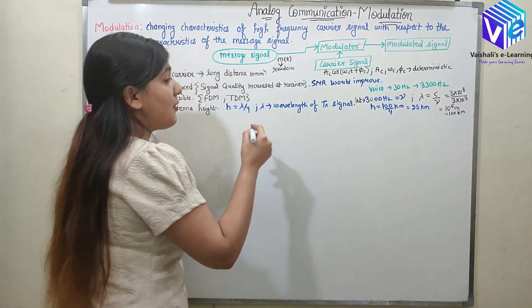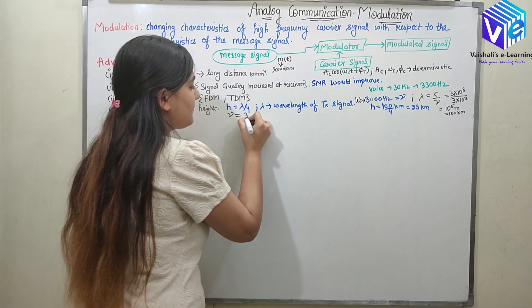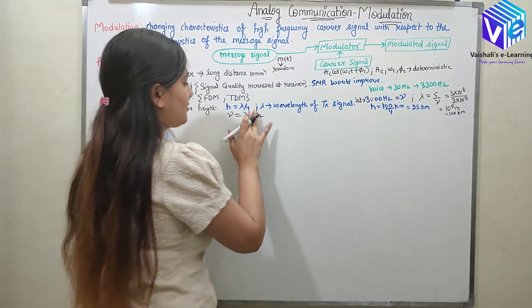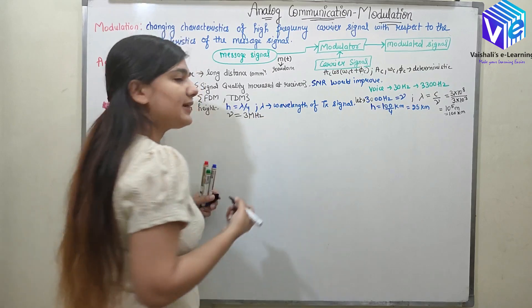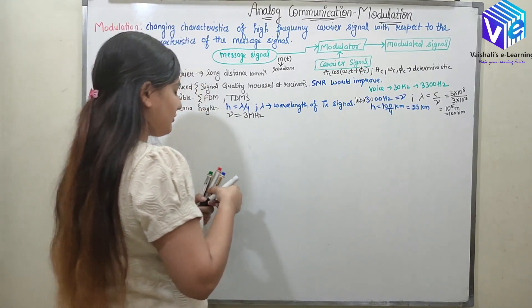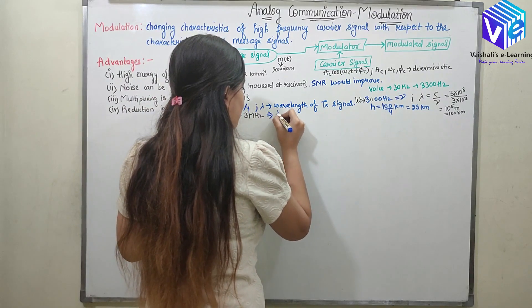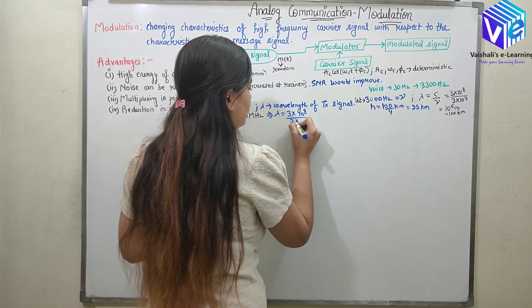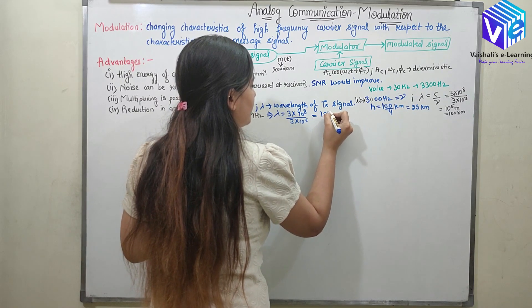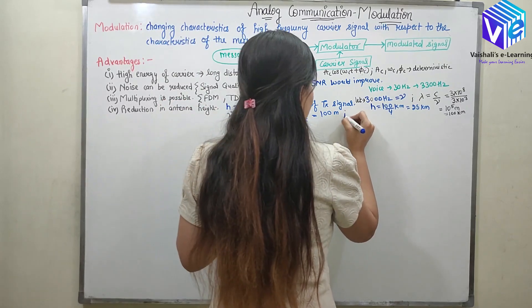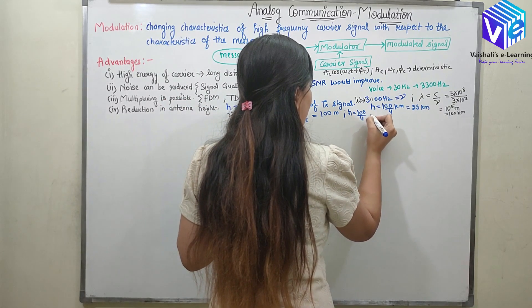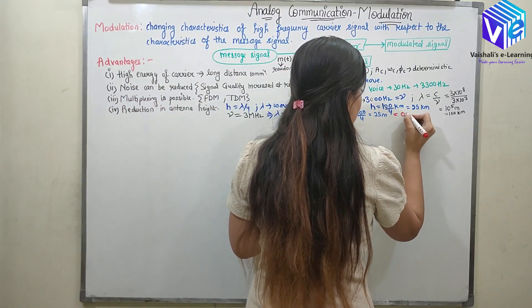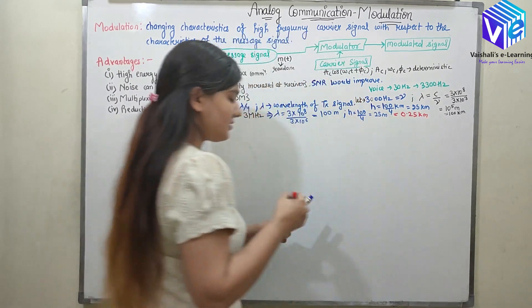Now coming to an example where I am taking frequency to be in the megahertz range. When I take the frequency in megahertz — let's say 3 MHz — lambda is equal to 3×10⁸ divided by 3×10⁶, which is 100 meters. So height would be 100/4, which is 25 meters, or 0.25 km. This is somewhat practical.